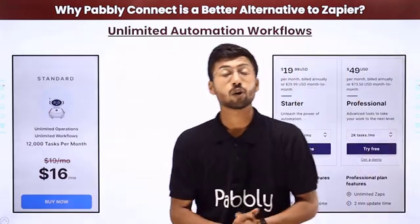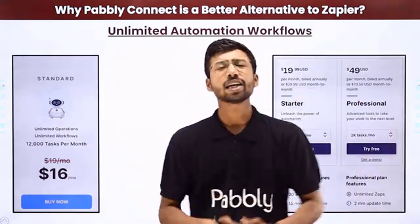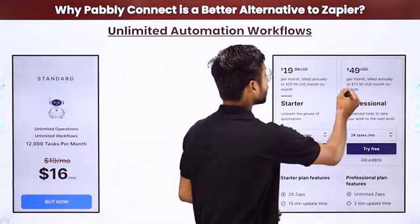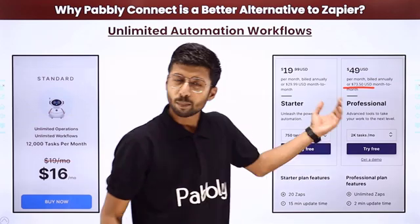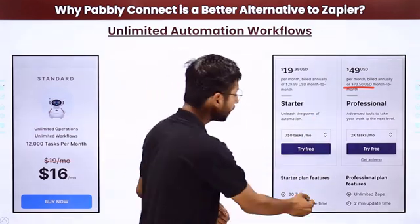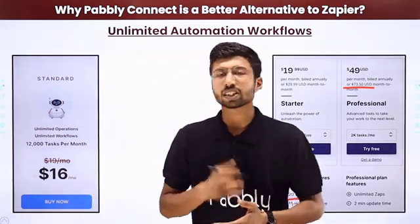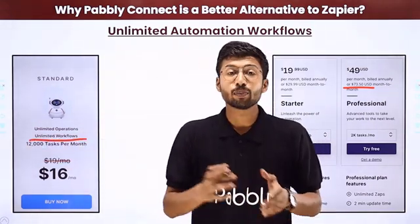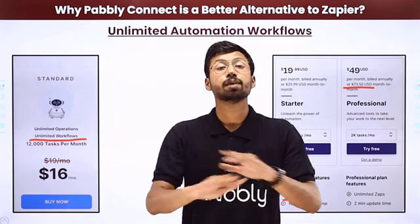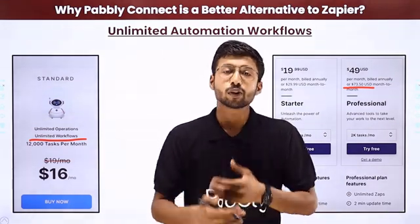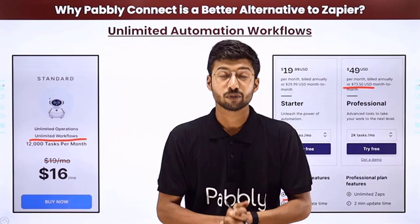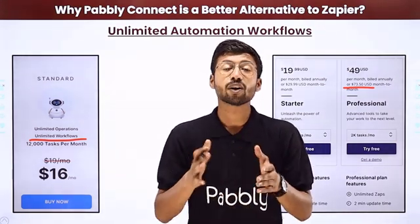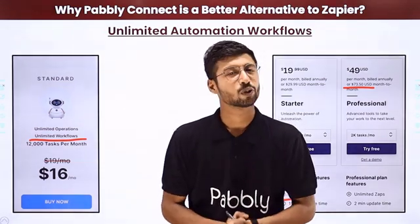The first point is unlimited automation workflows. To get unlimited automation workflows or unlimited Zaps in Zapier, you need a $74/month plan — plans before it come with a limitation. But in Pabbly Connect, there is no such limit. Each and every plan comes with unlimited automation workflows, so you can set up separate dedicated workflows and automate every task.